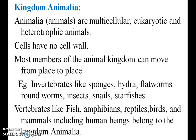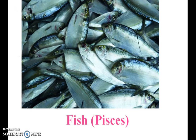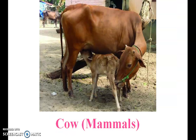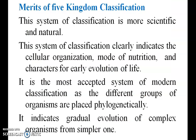Kingdom Animalia — that is, animals. These are multicellular, eukaryotic, heterotrophic animals. Their cells have no cell wall. Most members of the animal kingdom can move from place to place. Examples include fish, frog, crocodile, cow, and bats.